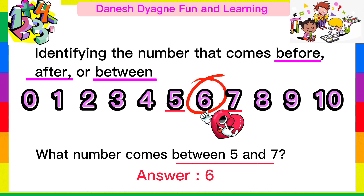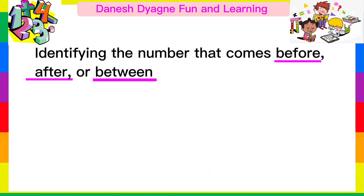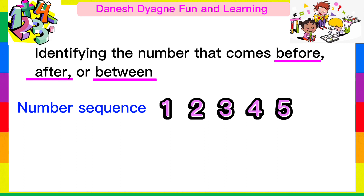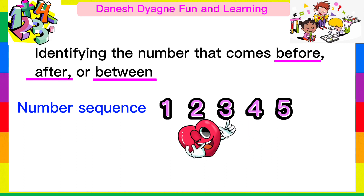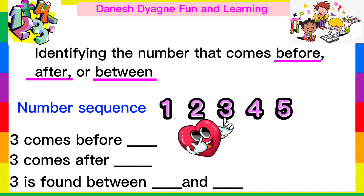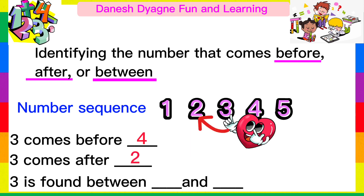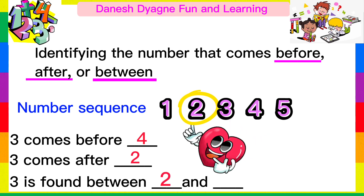Again, let's practice. Look at the number sequence. What can you say about the number 3? 3 comes before 4. 3 comes after 2. And 3 is found between 2 and 4.